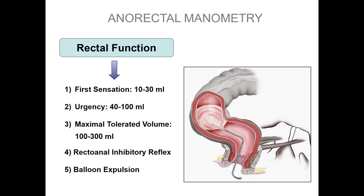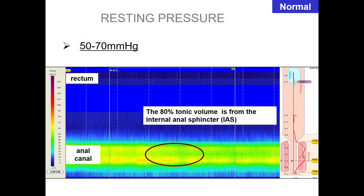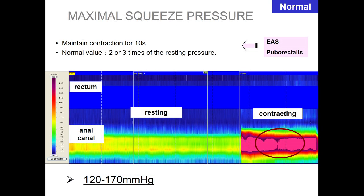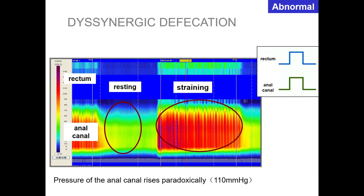I love and recommend performing anorectal manometry in females with outlet obstruction. With high-resolution manometry, color represents pressure. At rest you see yellow; ask to squeeze — red. Ask to strain and you see green because there is relaxation of the sphincter — synergic defecation. But if you have dyssynergic defecation, when you ask the patient to strain, the sphincter will contract instead.